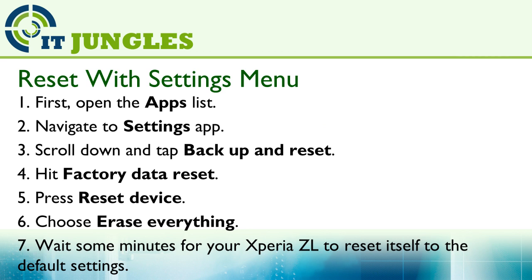Now you can reset the device using the Settings menu. This option is ideal when your phone is not frozen. First, go back to the home screen and open up the apps list. Navigate to the Settings app. Then scroll down and tap on Backup and Reset. Then hit on Factory Data Reset. Then press Reset Device.